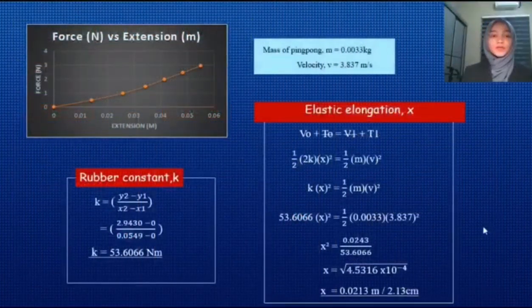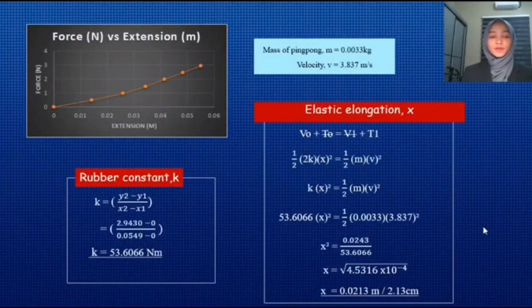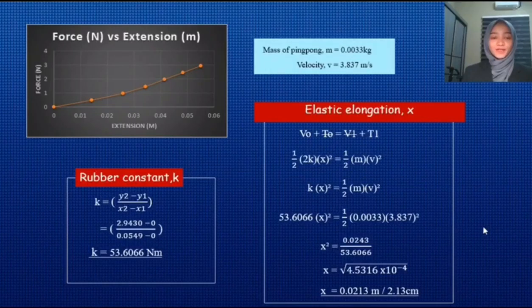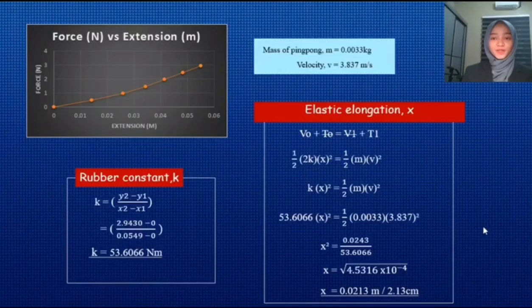So next, we plot the graph of force against extension. From this graph, we want to find the value of gradient. The value of gradient is same as the value of rubber constant. So we use formula K equal to Y2 minus Y1 divided by X2 minus X1. So the value of K that we get is 3.6060 newton per meter.